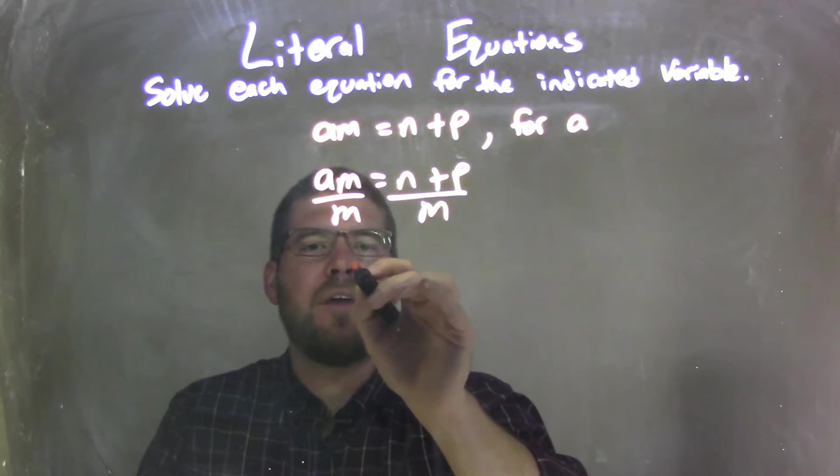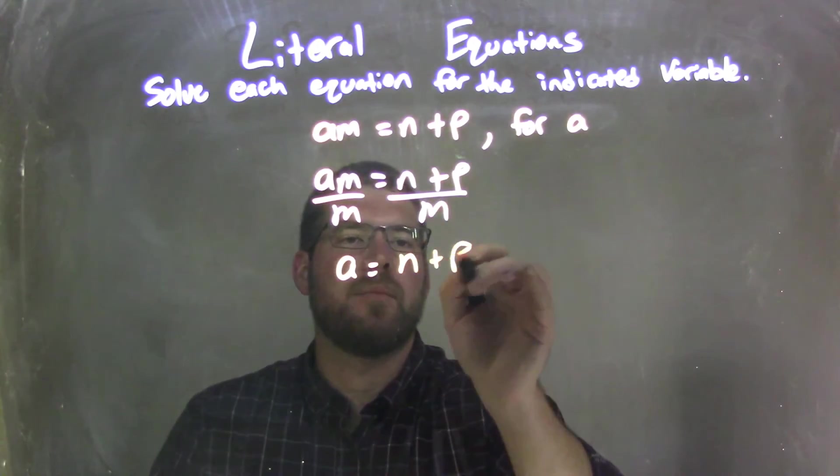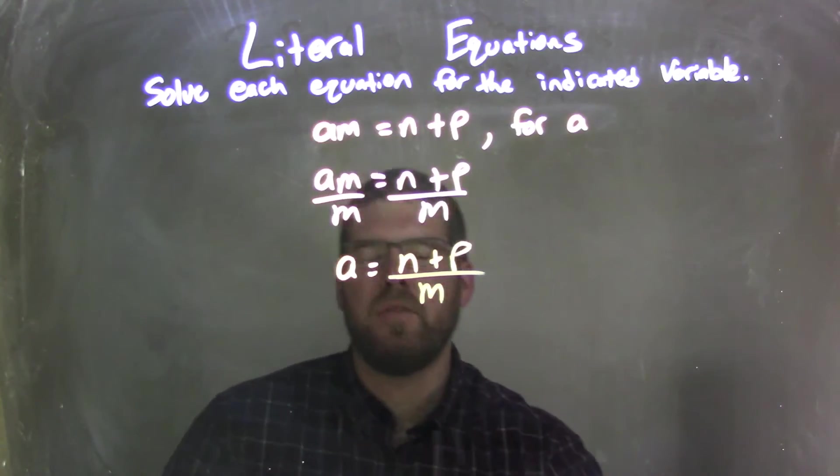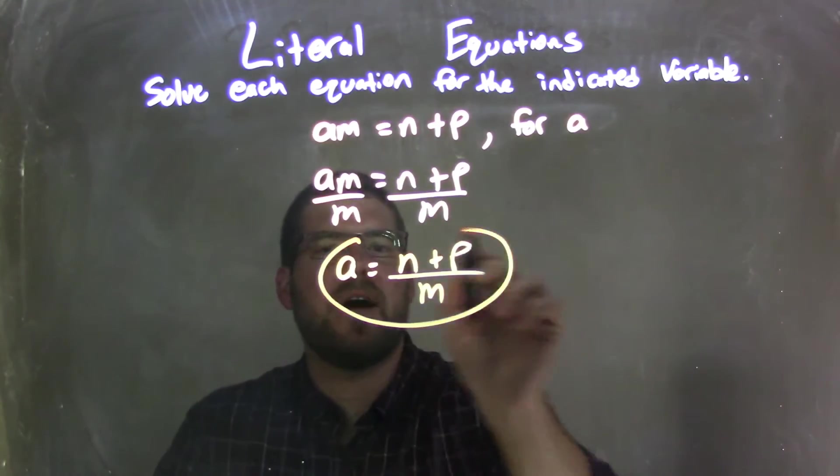So the m's cancel on the left, leave me with an a by itself on the left, equals, well, none of these are like terms, so I can't combine anything. So I just have a equals n plus p all over m, and that is, in fact, my final answer.